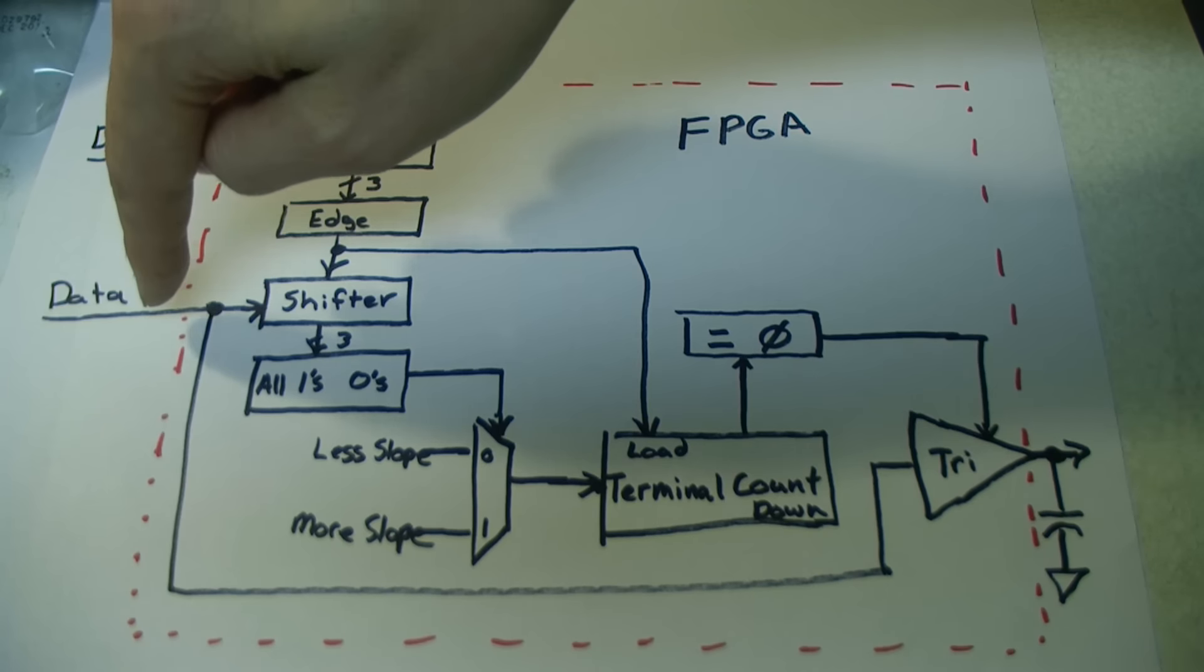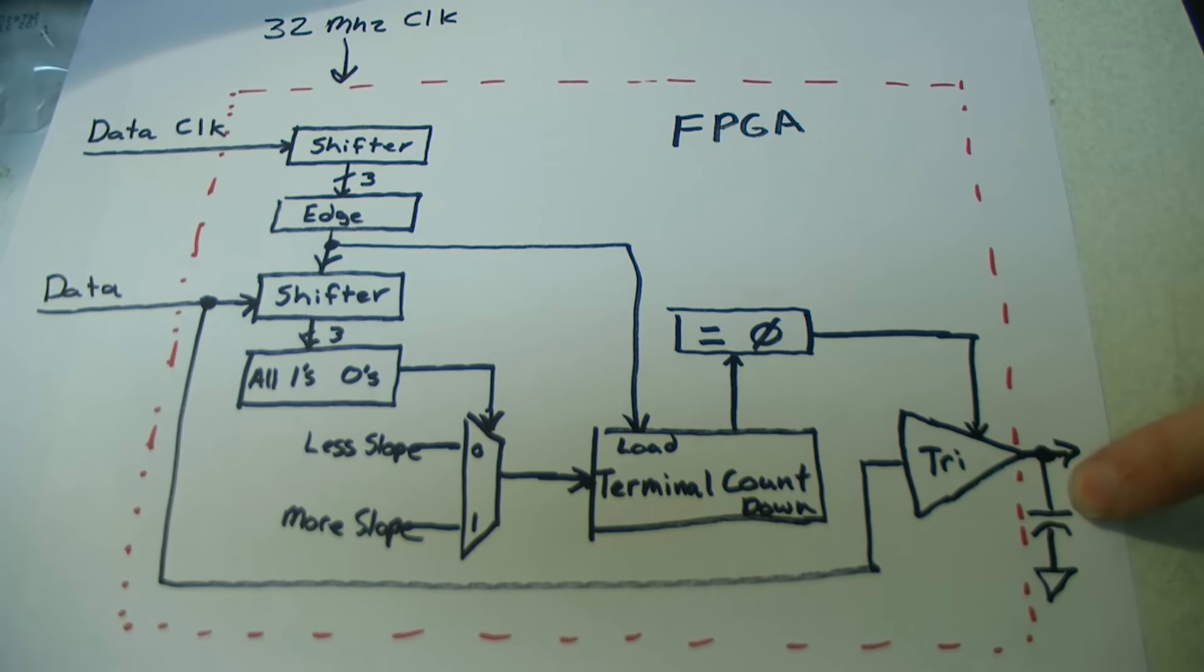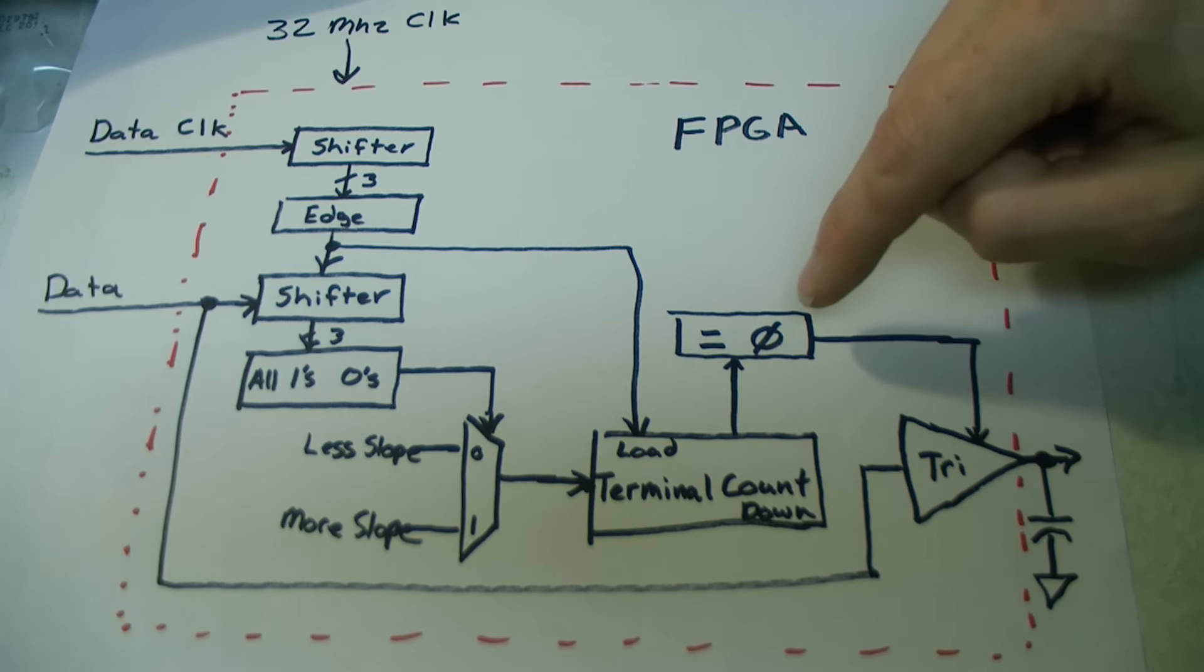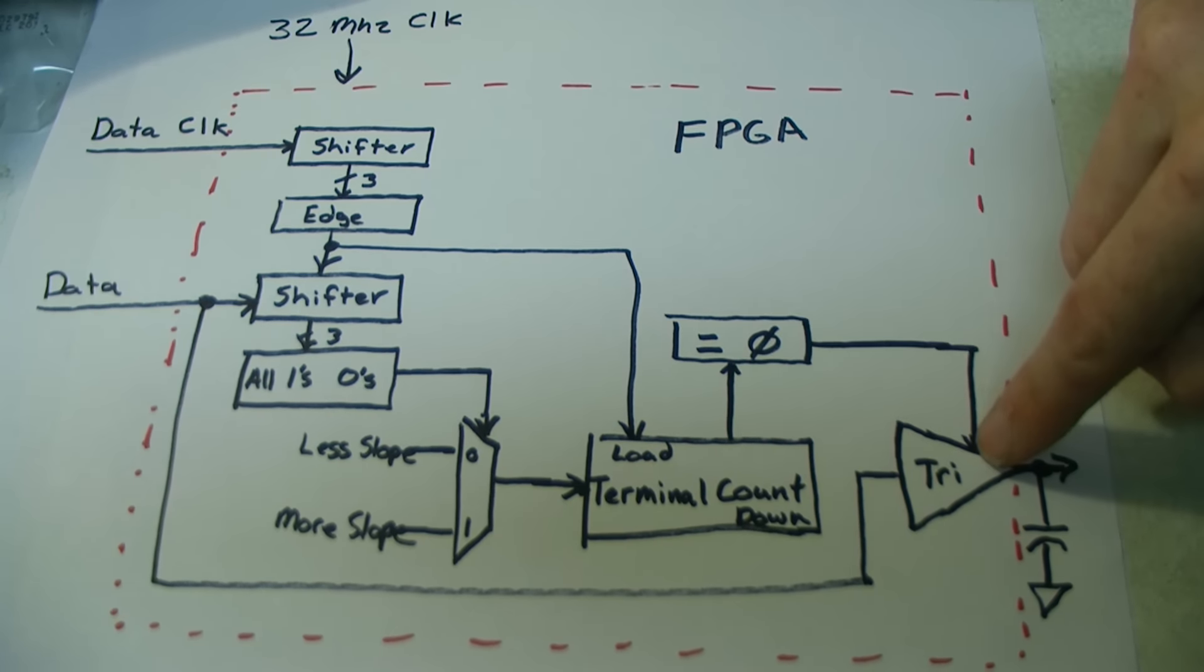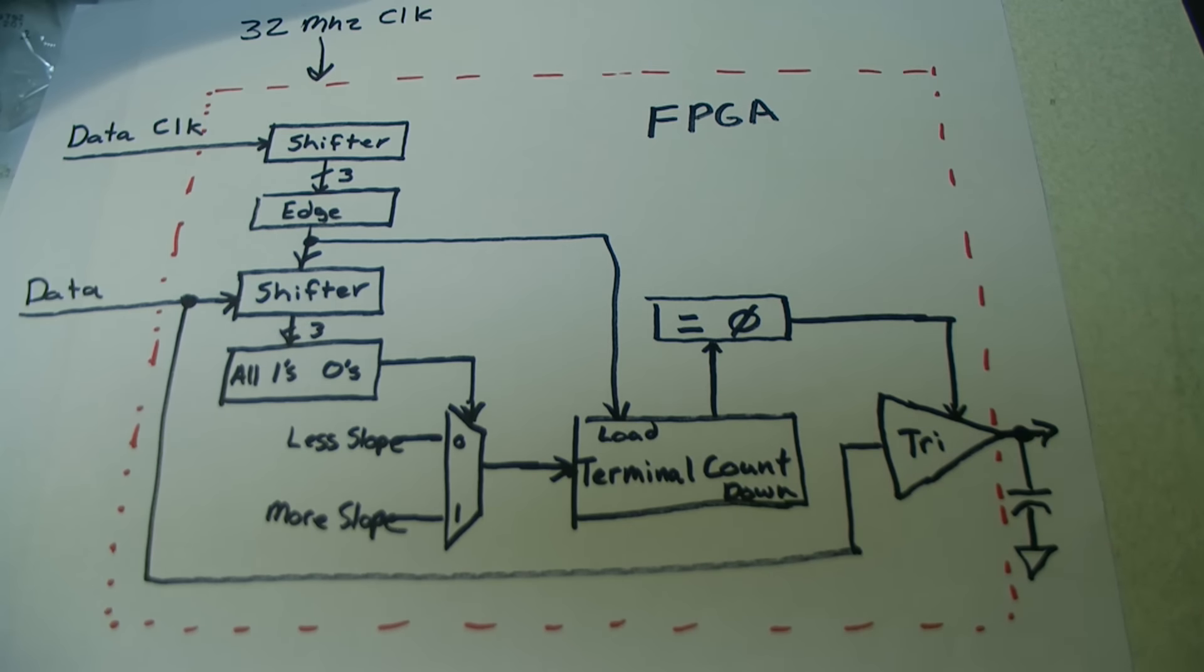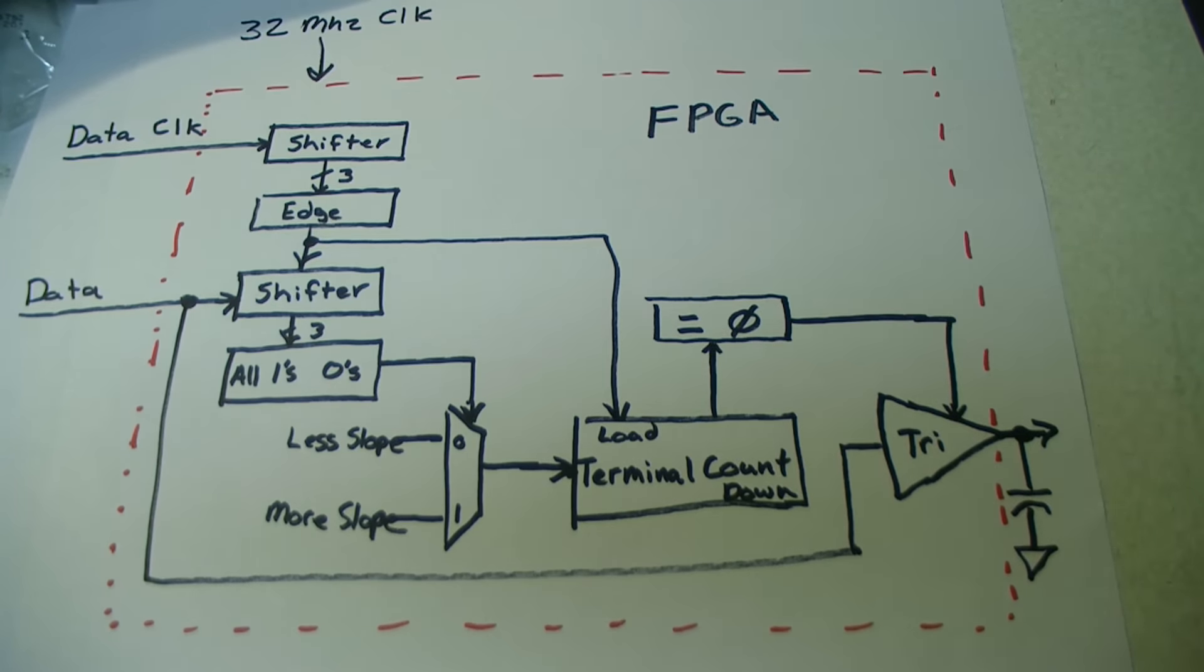When the counter is not at 0, the data is fed through a tri-state buffer out to a capacitor either adding or removing charge. Once it reaches 0, then the tri-state buffer is opened up and the drivers are no longer adding or removing charge. And that was pretty much it. It was pretty simple to put together and worked pretty quickly, just a little bit of fudging with these constants over here to make it sound the best.